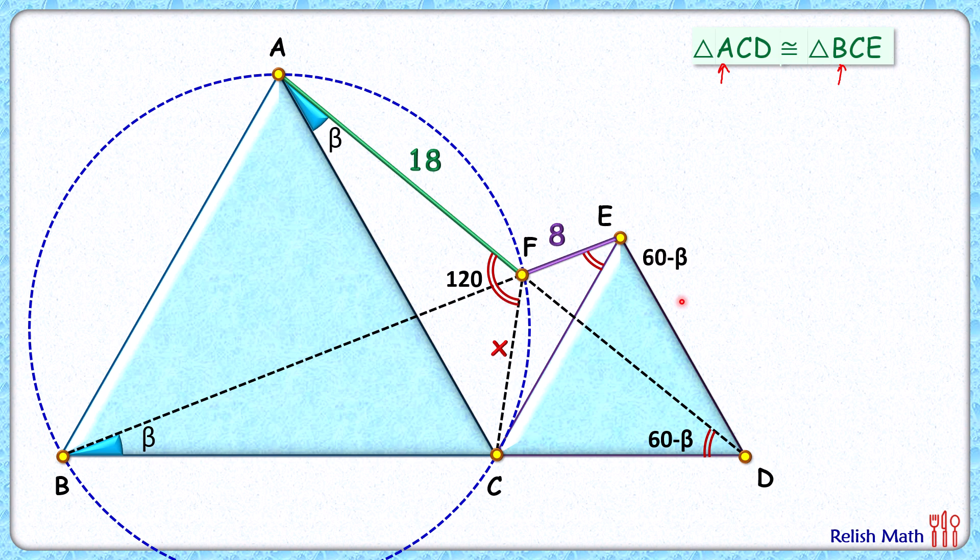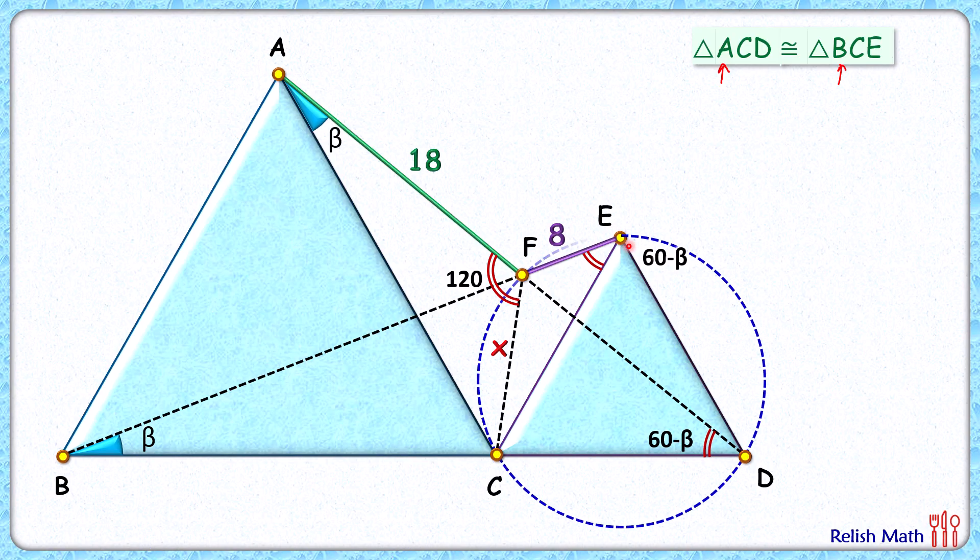Same logic: we can prove that FC is a line segment subtending an angle at point D and an angle at point E—equal angles—and thus all these points E, D, C, F are cyclic. And in this cyclic quadrilateral, angle D is 60, and thus angle F will be 120 degrees.